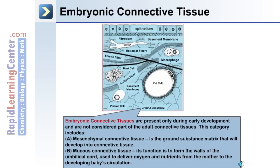The second type of connective tissue is embryonic connective tissue. These are present only during early development and are not considered part of the adult connective tissues. This category includes mesenchymal connective tissue, which is the ground substance matrix that will develop into connective tissue later on, and mucus connective tissue, which functions to form the walls of the umbilical cord, used to deliver oxygen and nutrients from the mother to the developing baby's circulation.